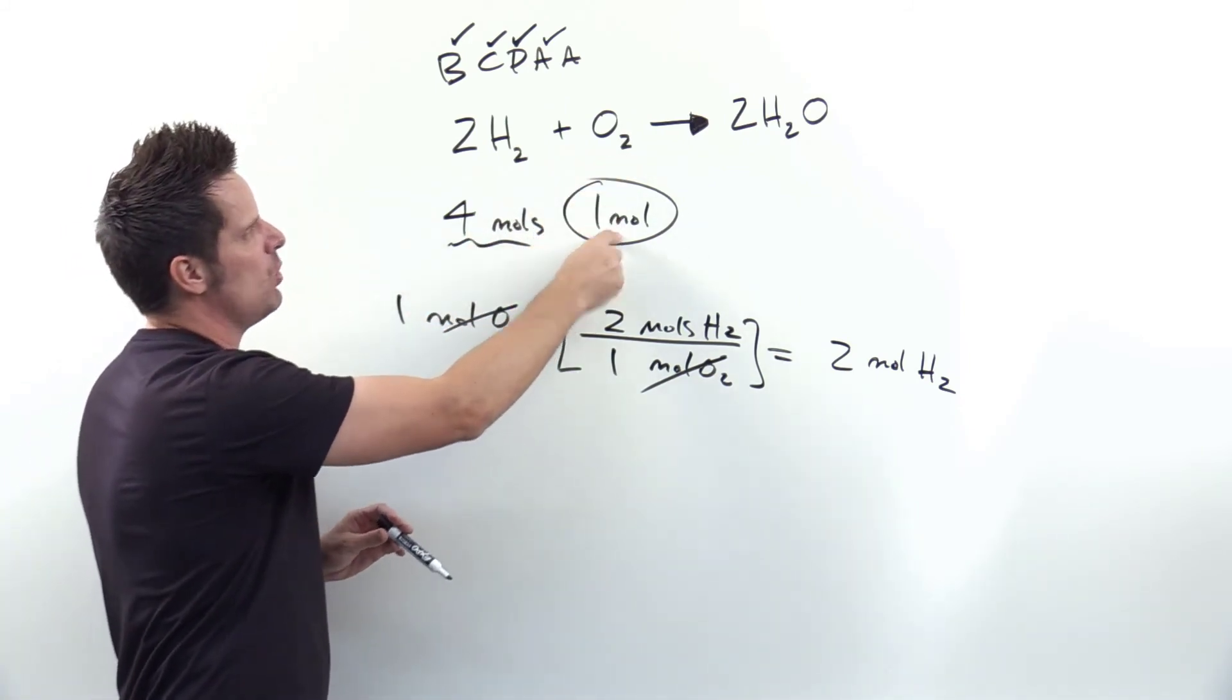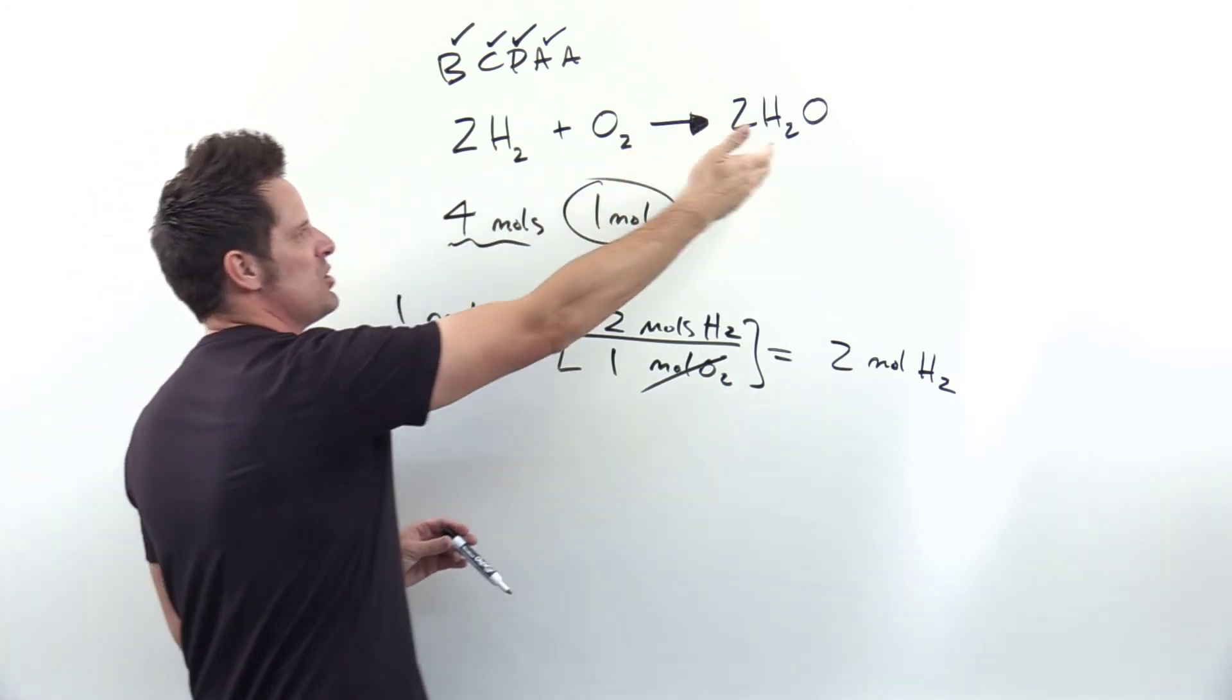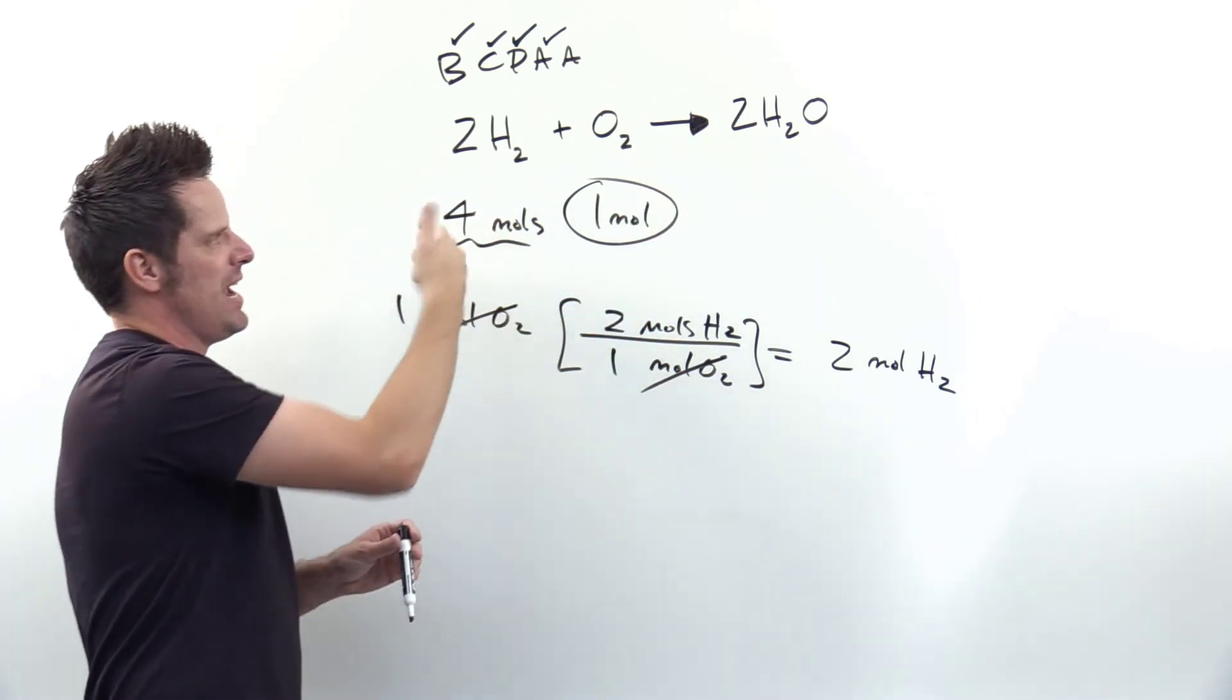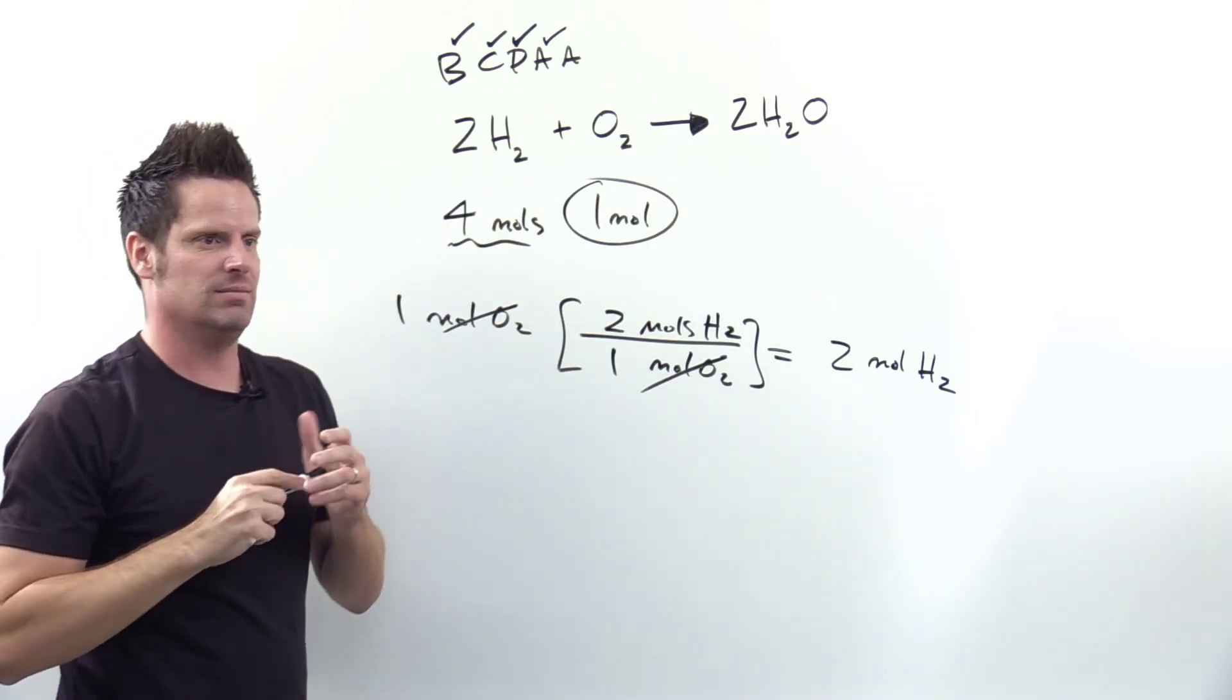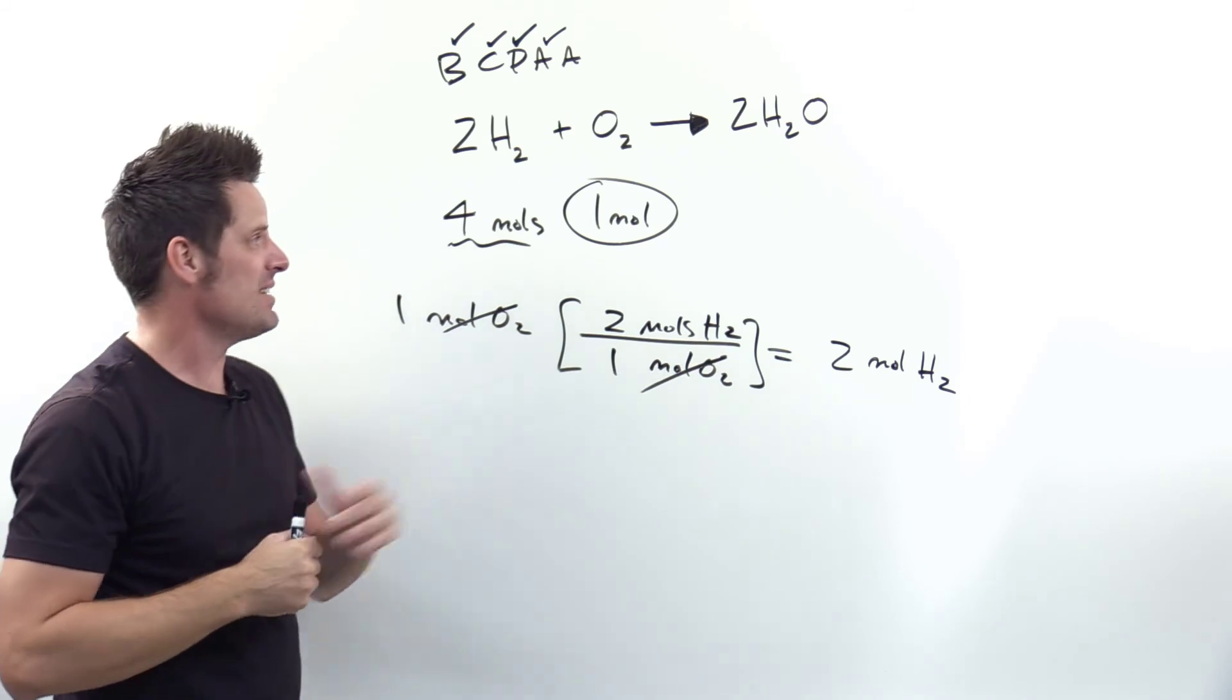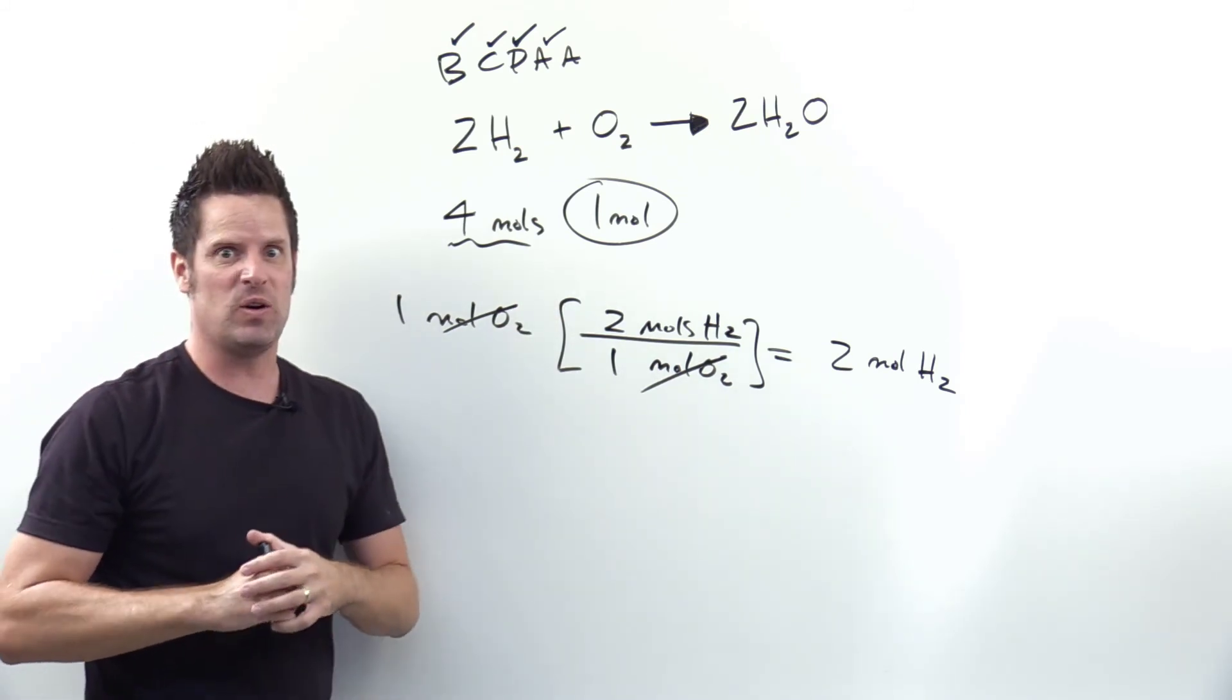So it will react, the 1 mole of O2 will react with 2 moles of H2 to produce 2 moles of H2O, and the extra H2 just floats around after the reaction's over, doing its own thing I guess. That makes sense? So that is the answer to our question.